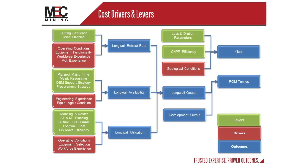The typical value driver tree for the underground, where we have rates and time, these flow through to obviously an output and eventually ROM tons and yield and product from all the other different little value driver trees that feed into the output.